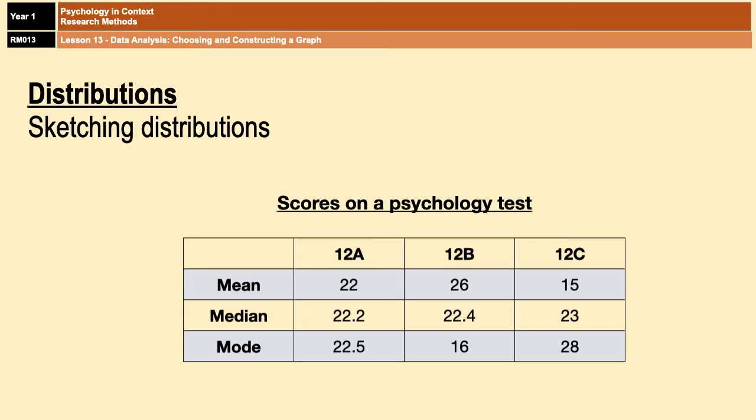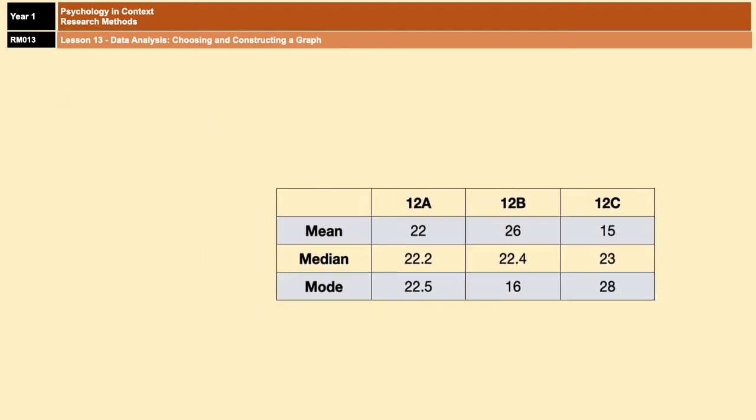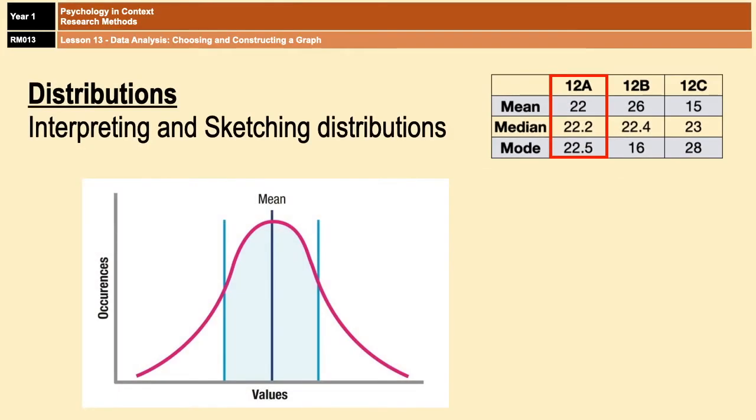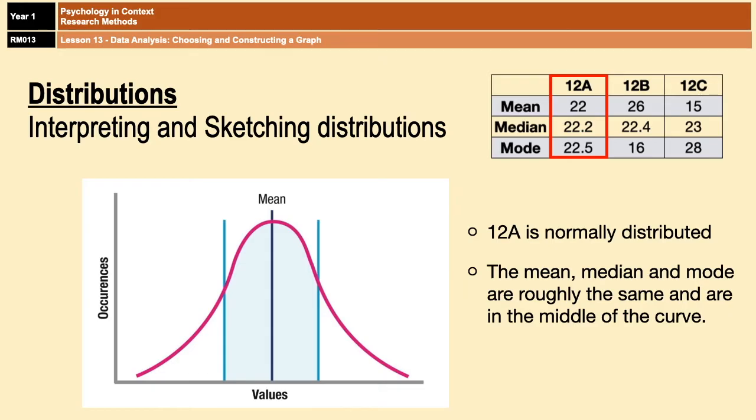Bearing that in mind, let's imagine that a psychology exam is given to three different classes. And the scores of those classes are summarized for you on the screen now. In 12A, the mean, the median, and the mode are all pretty much the same. So that means that the results are all close to the mean, and that results in a normal distribution.